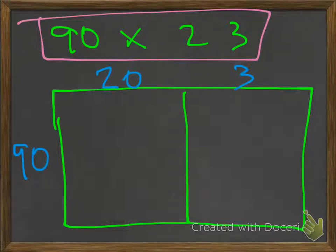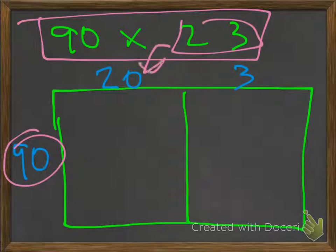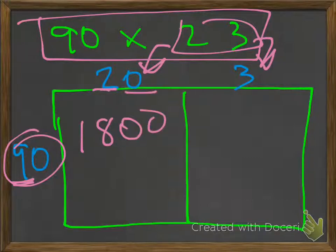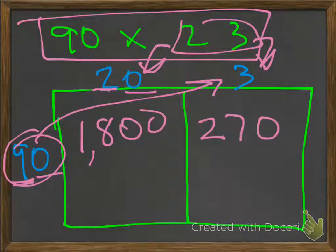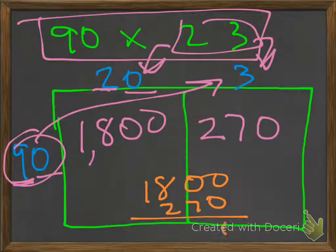But what if we went ahead and split it up and used an array? We put 90 over here, and we take this 23 and put 20 there and 3 here. So really, 9 times 2 is 18, and then we have our two zeros — one there, one there — giving us 1,800. And then 90 times 3: 9 times 3 is 27, plus the extra zero, giving us 270. We add them up together: 1,800 plus 270, and we get 2,070.